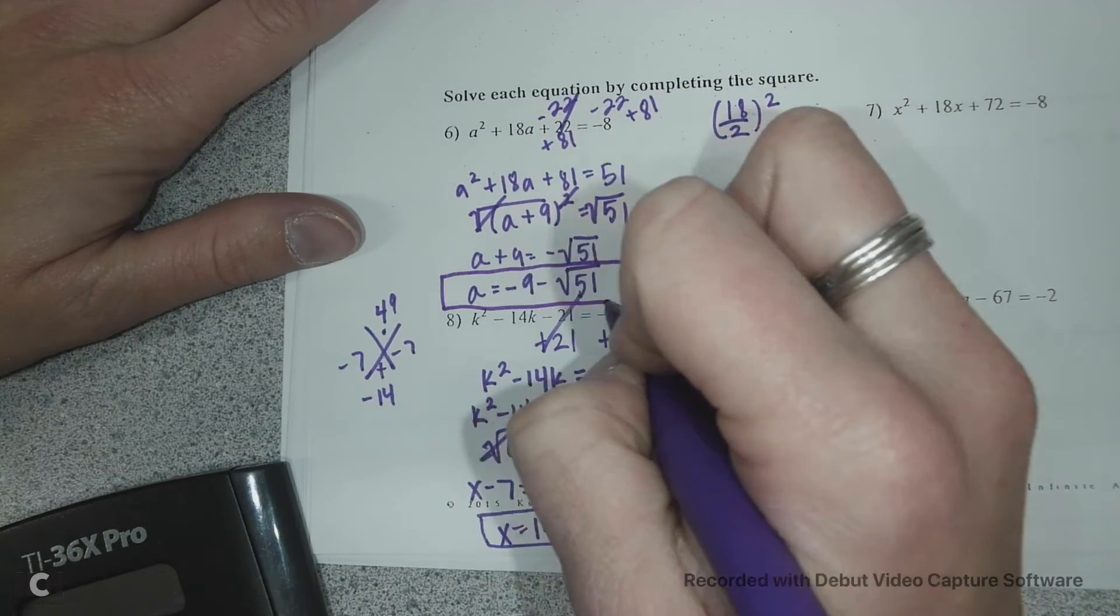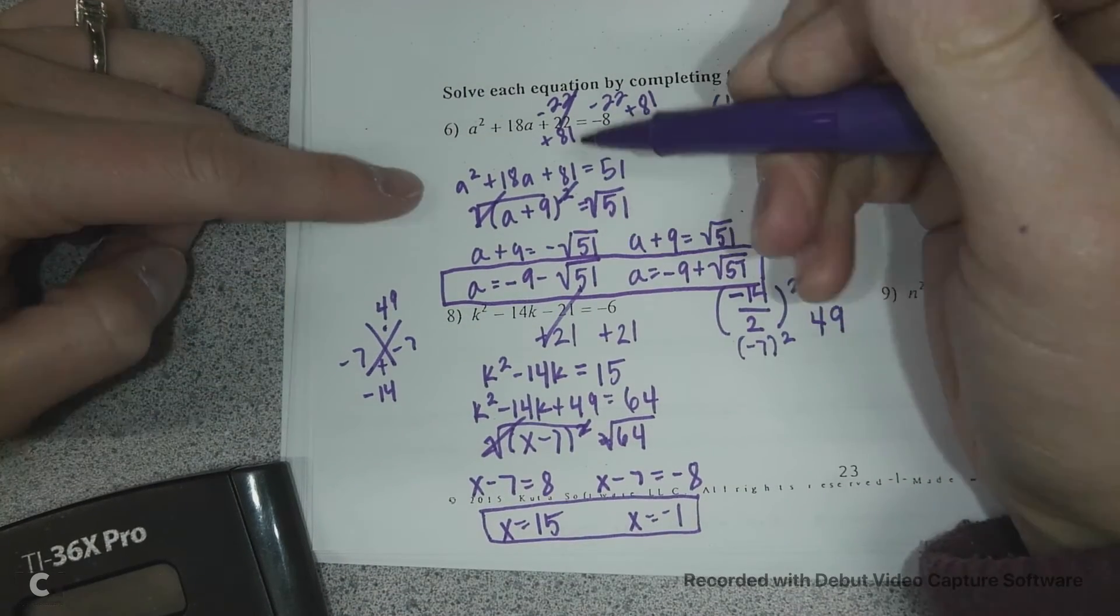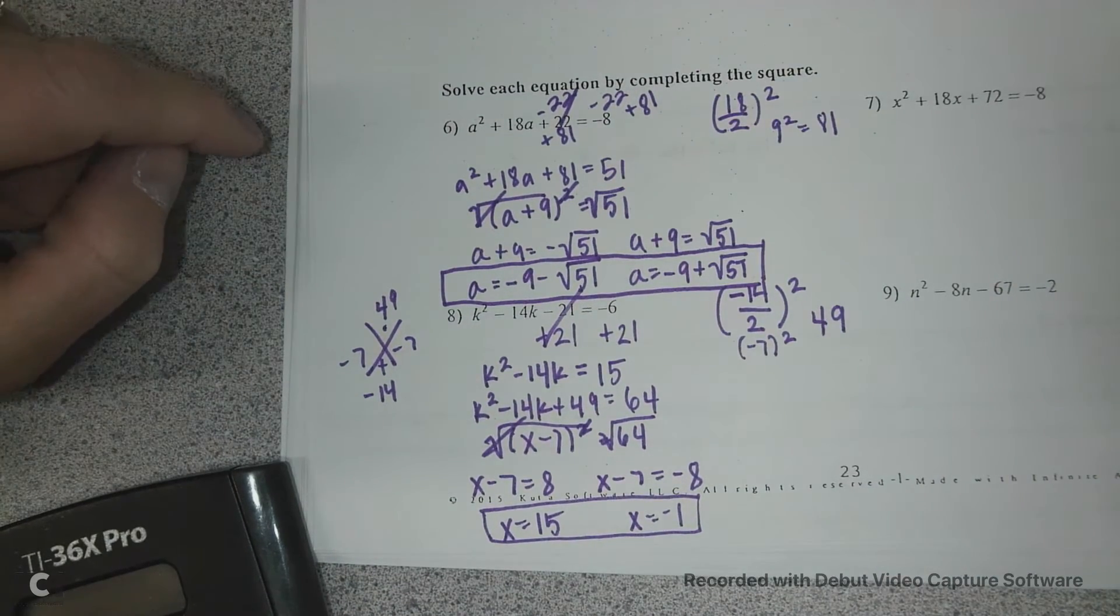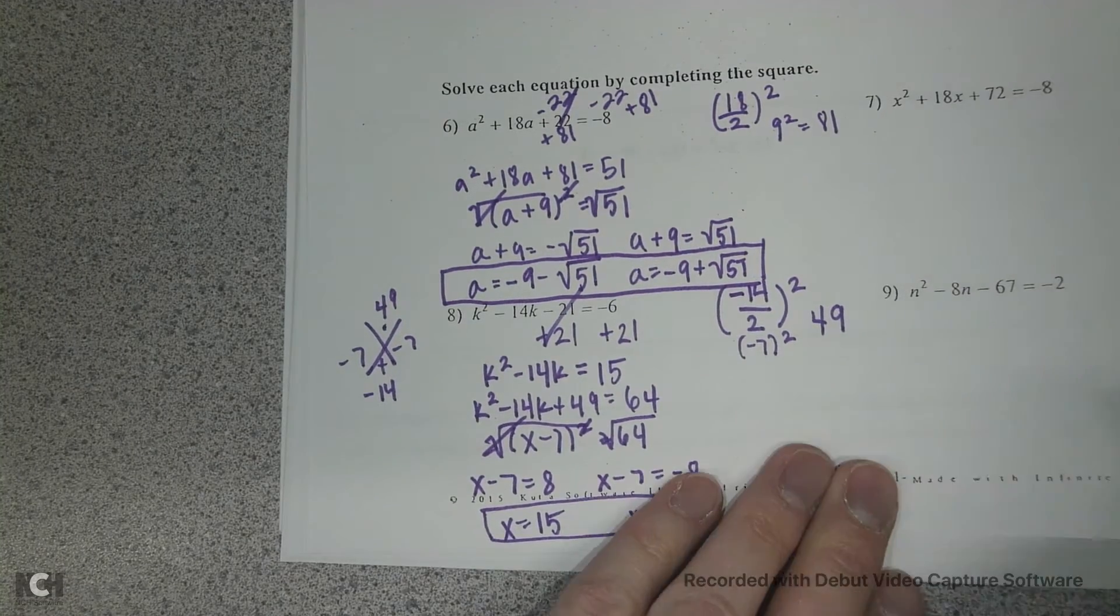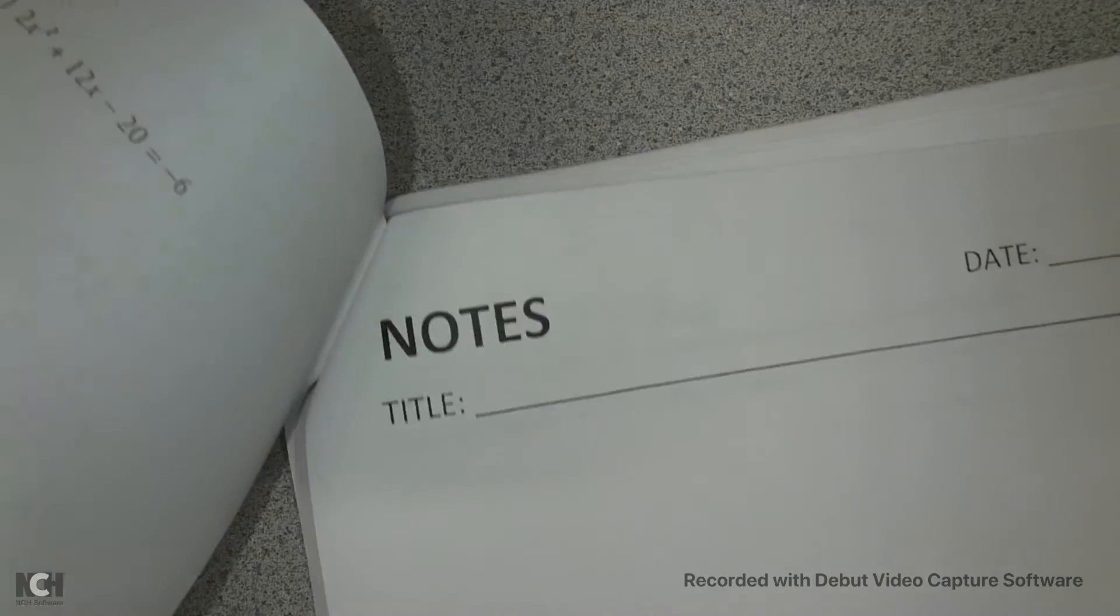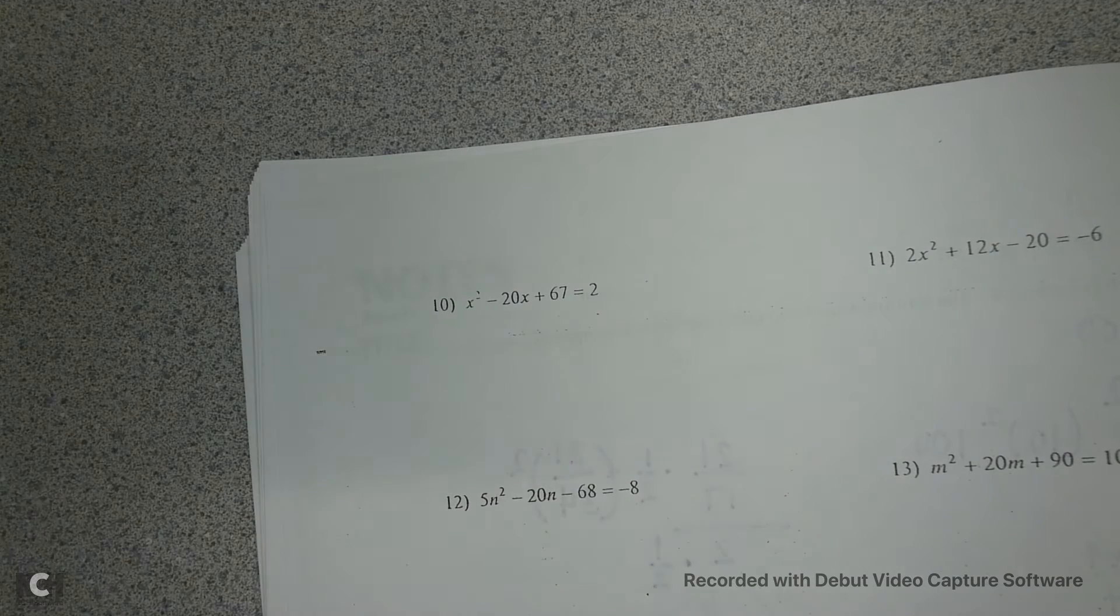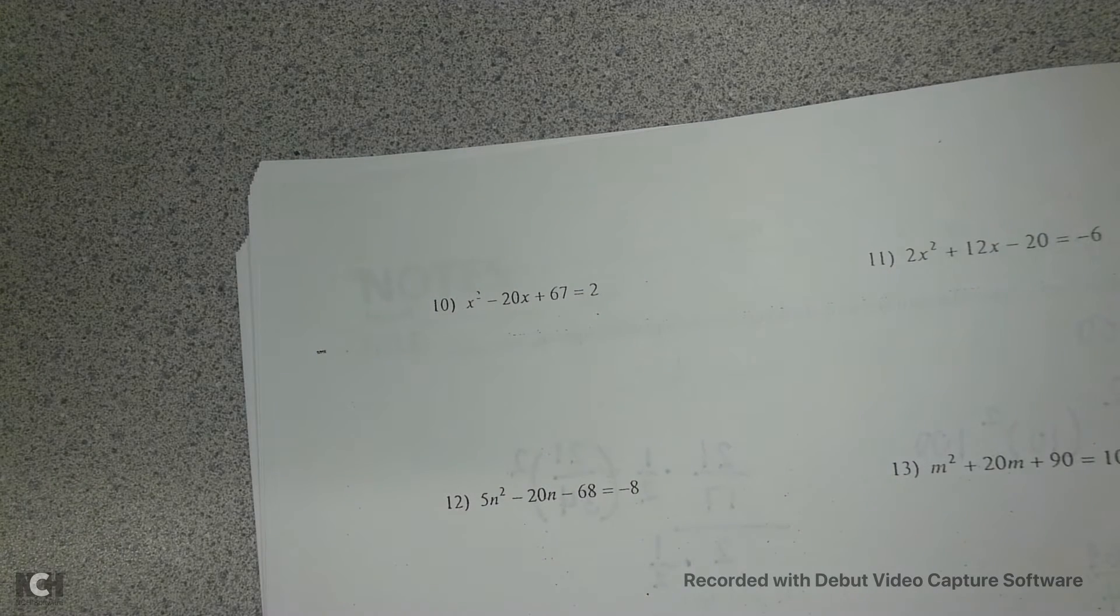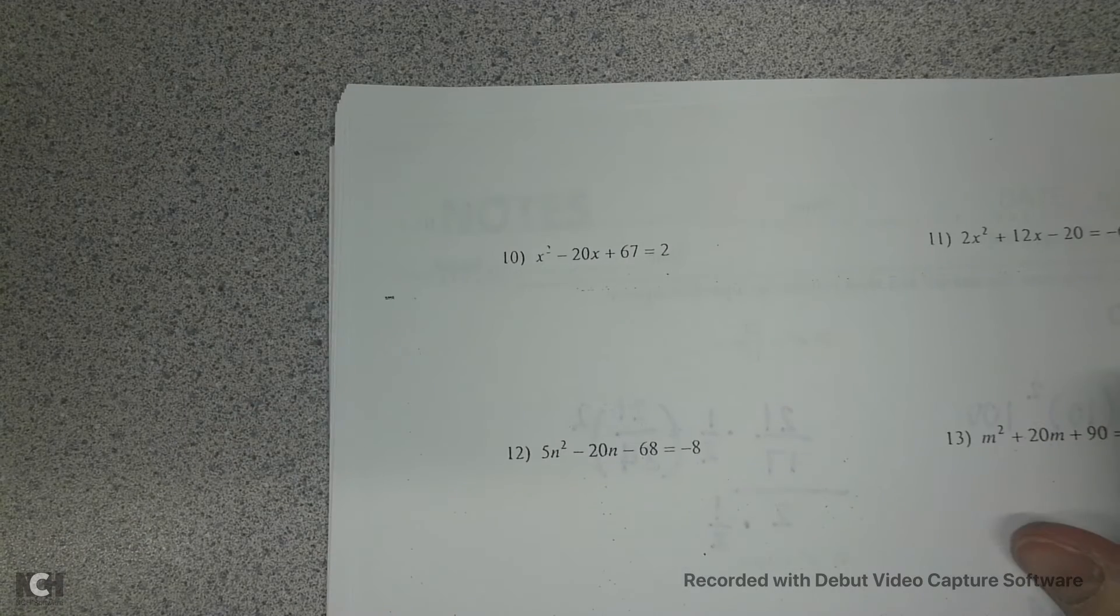So we need two answers. I did this problem kind of fast. I skipped some steps that we've been talking about for quite a few days. If you need more refreshers on that, I would suggest going back and watching the other videos for completing the square one, two, or three. Probably two or three. Okay, on the back side, let's talk about some more of these. So we're going to just do 10, 12, and 14 together.